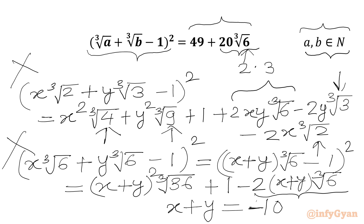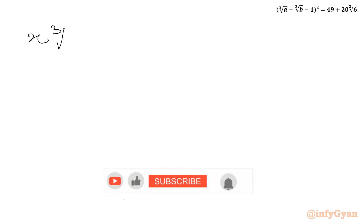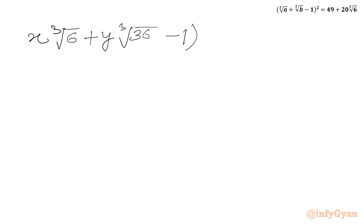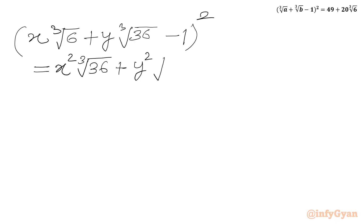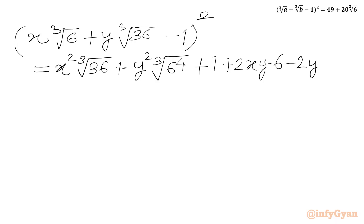Now we will consider x·∛6 plus y·∛36 minus 1, whole squared. Let us expand using the a plus b plus c whole square formula. We get x²·∛36 plus y²·∛(36²) — which is 6⁴ — plus 1, plus 2xy·∛6·∛36. Since ∛6 times ∛36 equals ∛216 equals 6, we get plus 12xy. Then minus 2y·∛36 minus 2x·∛6.